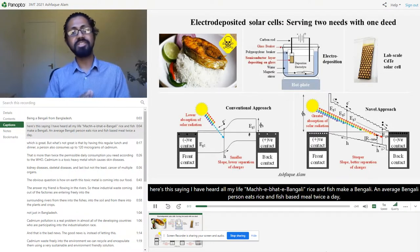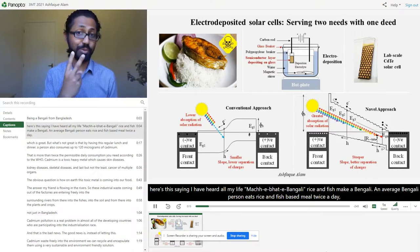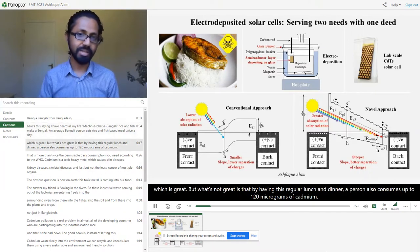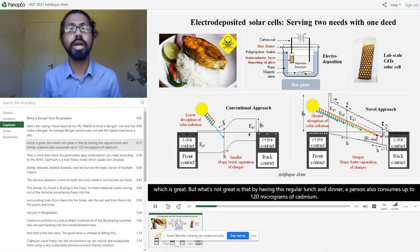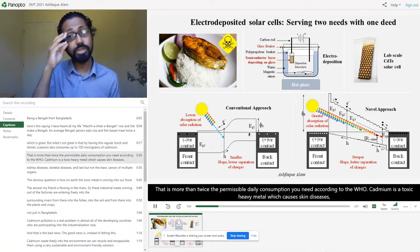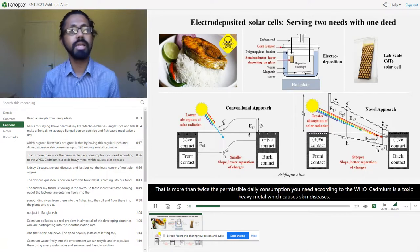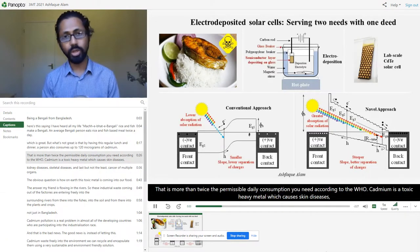An average Bengali person eats rice and fish based meal twice a day, which is great. But what's not great is that by having this regular lunch and dinner, a person may also consume up to 120 microgram of cadmium. That is more than twice the permissible daily consumption limit, according to WHO.